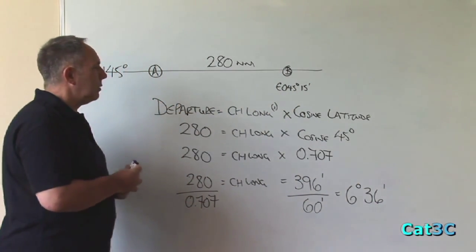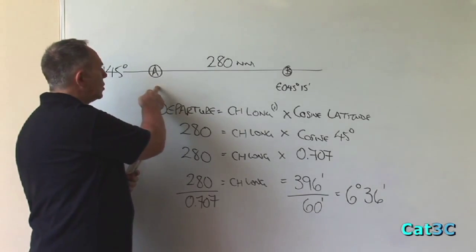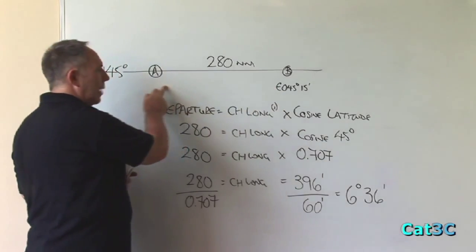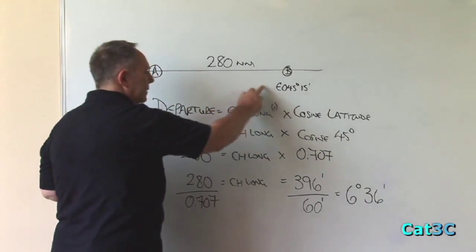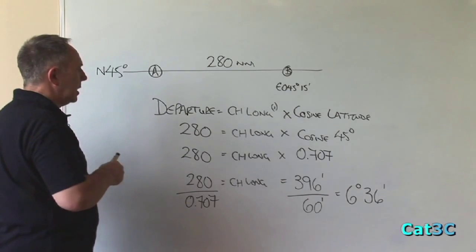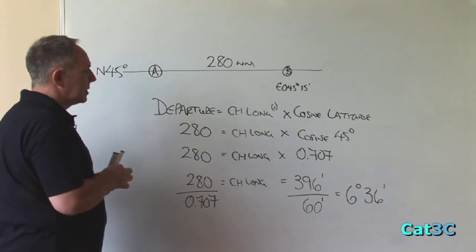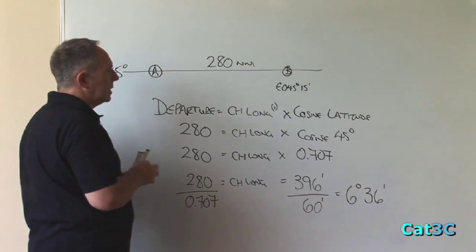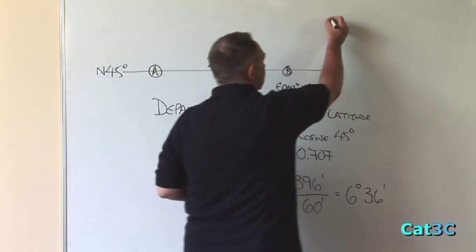What I have to do now is to work out the longitude at A. Obviously, if I'm travelling to the west from east 45 degrees 15 minutes, the number is going to be getting less. So in order to work it out, I just subtract 6 degrees and 36 minutes from east 45 degrees 15 minutes. I'll draw that up here.